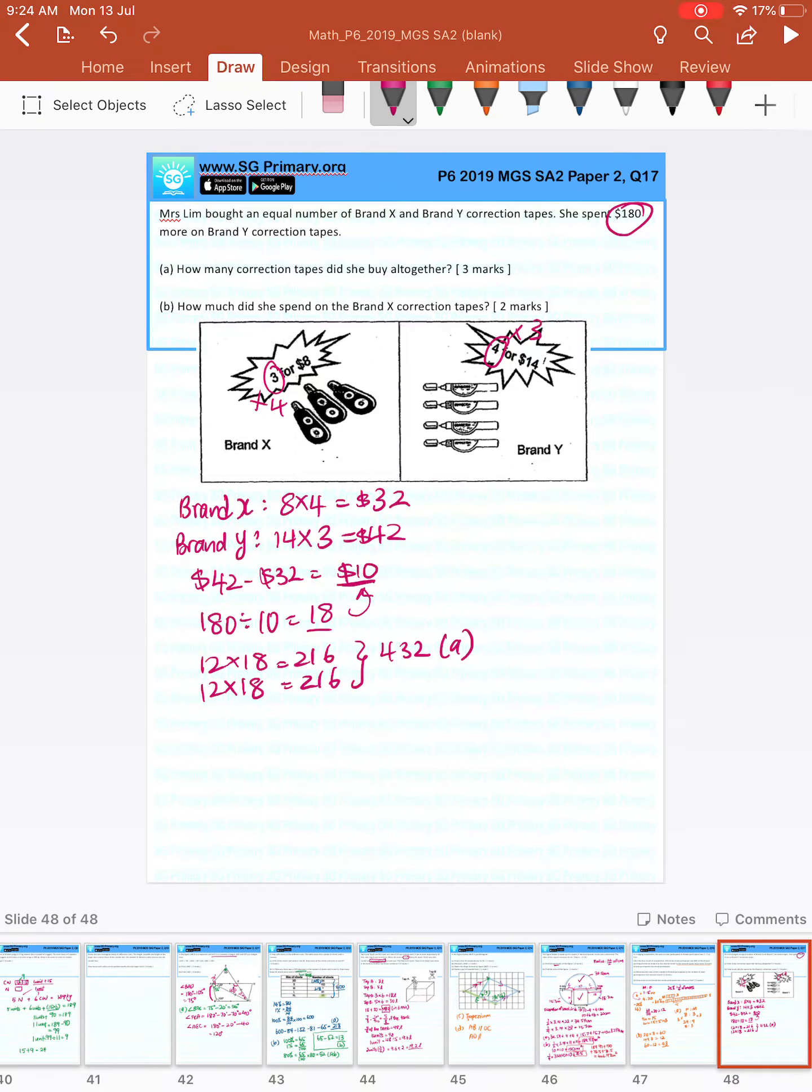Part B. How much did she spend on Brand X? She bought 216, 216 in sets of 3, so divided by 3, 72. 72 sets of this times 8 is 576.